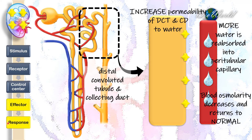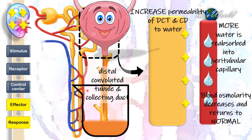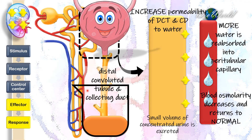The response we observe from this osmoregulation process is that since the tubules now have less water, the urine formed will have a lower volume and appear darker in colour because it is concentrated.